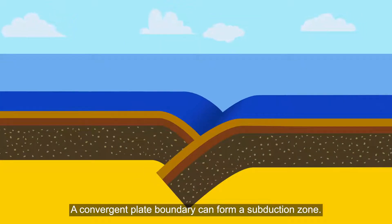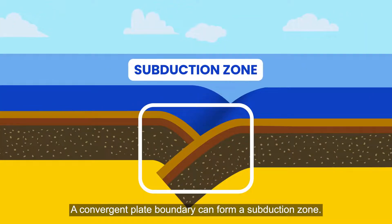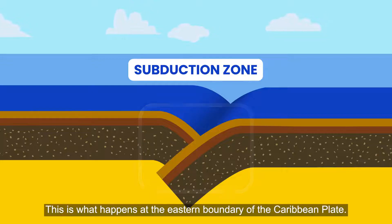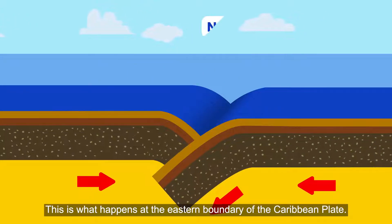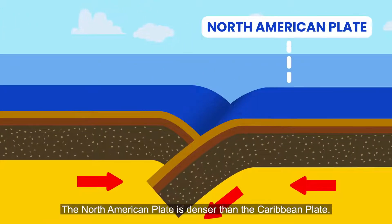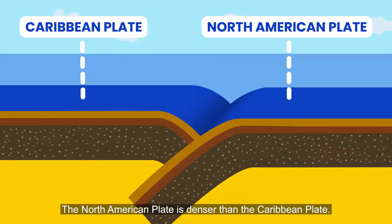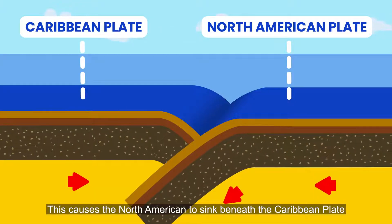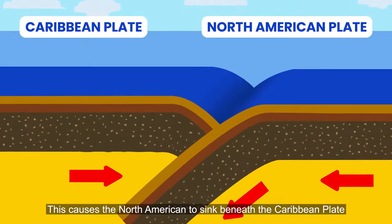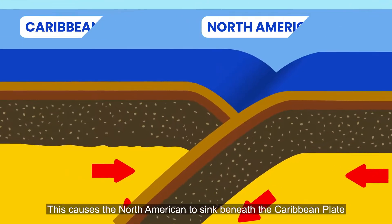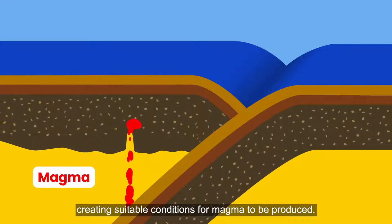A convergent plate boundary can form a subduction zone. This is what happens at the eastern boundary of the Caribbean plate. The North American plate is denser than the Caribbean plate, which causes it to sink beneath the Caribbean plate, creating suitable conditions for magma to be produced.